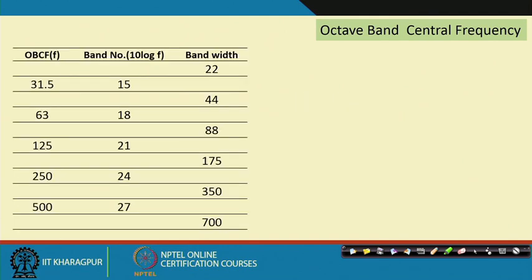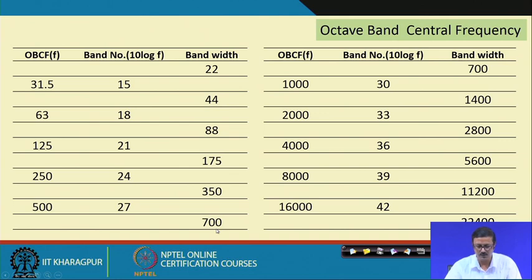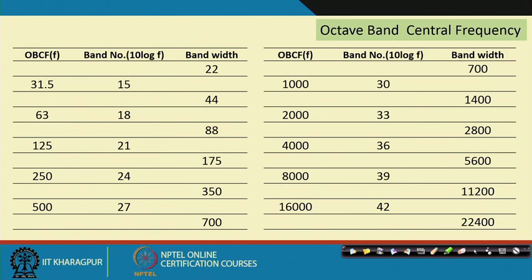From this, all the OBCF (octave band central frequencies), band numbers, and bandwidths can be tabulated. The entire audible spectrum from 22 Hz to 22,400 Hz is covered by all 10 OBCF.